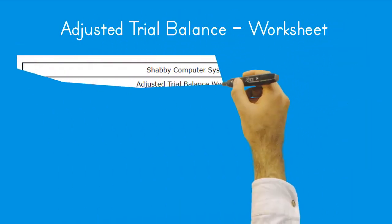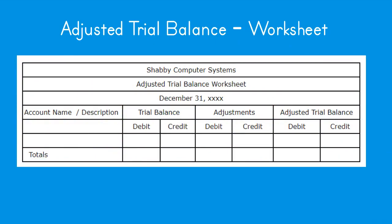Adjusted trial balance worksheet. The heading area contains the company name, title, and period ending date. Columns include: account name/number; a trial balance column (unadjusted balances taken from the trial balance worksheet); an adjustments column (debit and credit amounts obtained from reviewing business activities to identify unaccounted transactions); and an adjusted trial balance column, which is calculated by taking the trial balance amounts and adding or subtracting the adjustment amounts.